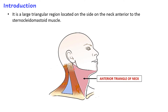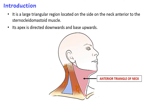The anterior triangle is located on the side of the neck. The side of the neck is divided into two triangles by the sternocleidomastoid muscle. The anterior triangle is located anterior to the sternocleidomastoid. Its apex is directed downwards and the base is directed upwards, whereas in the posterior triangle it is vice versa — the apex is directed upwards and the base is directed downwards.